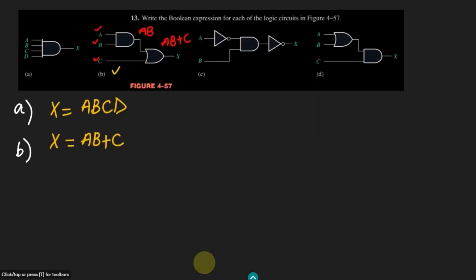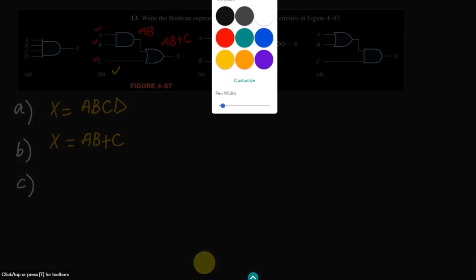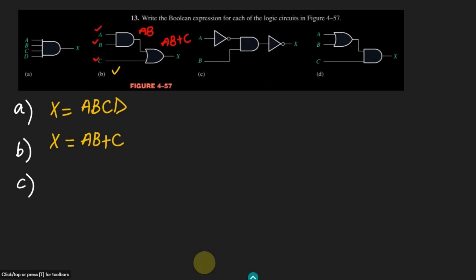Similarly in part C here we can see that we have again two inputs but here different gates are involved. Initially this A is given to this inverter and then A and B then given to this AND gate. So what we have to do, again we have to use the same procedure.